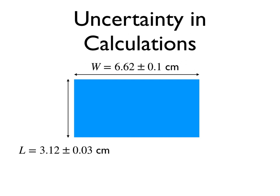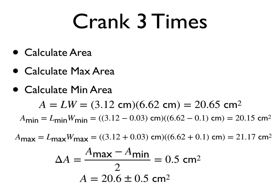Now, there's another way to get the uncertainty. Suppose I want to calculate the area of this rectangle. I don't measure area. I measure length and width, and I use that to calculate the area. So here I have a width of 6.62 plus or minus 0.1 centimeters. I just made this up. It's not real. And a length of 3.12 plus or minus 0.03 centimeters. So how would I calculate the area and the uncertainty in the area? This is where we're going to do the crank three times method. And I stole this from Andy Runquist, who may have stole it from someone else, but just letting you know, that's where it came from. There are other ways to calculate the uncertainty from calculated quantities, but this is the easiest.